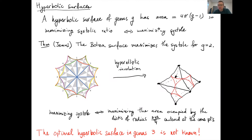Unfortunately, this argument doesn't extend to higher genus because a generic genus-three surface is not hyperelliptic. So there's no disk packing that you can get from a collection of shortest closed geodesics on the surface, because there's no natural choice of centers for the discs.